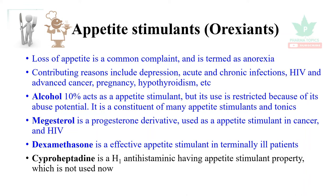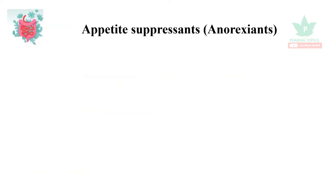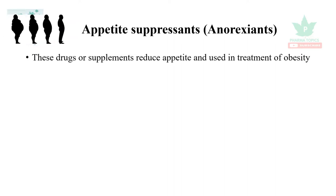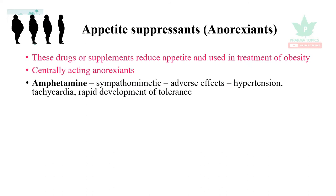Cyproheptadine is a H1 antihistaminic drug with appetite stimulant properties, but due to sedation it is not used nowadays. The next category is appetite suppressants, also called anorexians. These drugs reduce appetite and are used in treatment of obesity. The centrally acting anorexian amphetamine is a sympathomimetic drug; its adverse effects are hypertension,